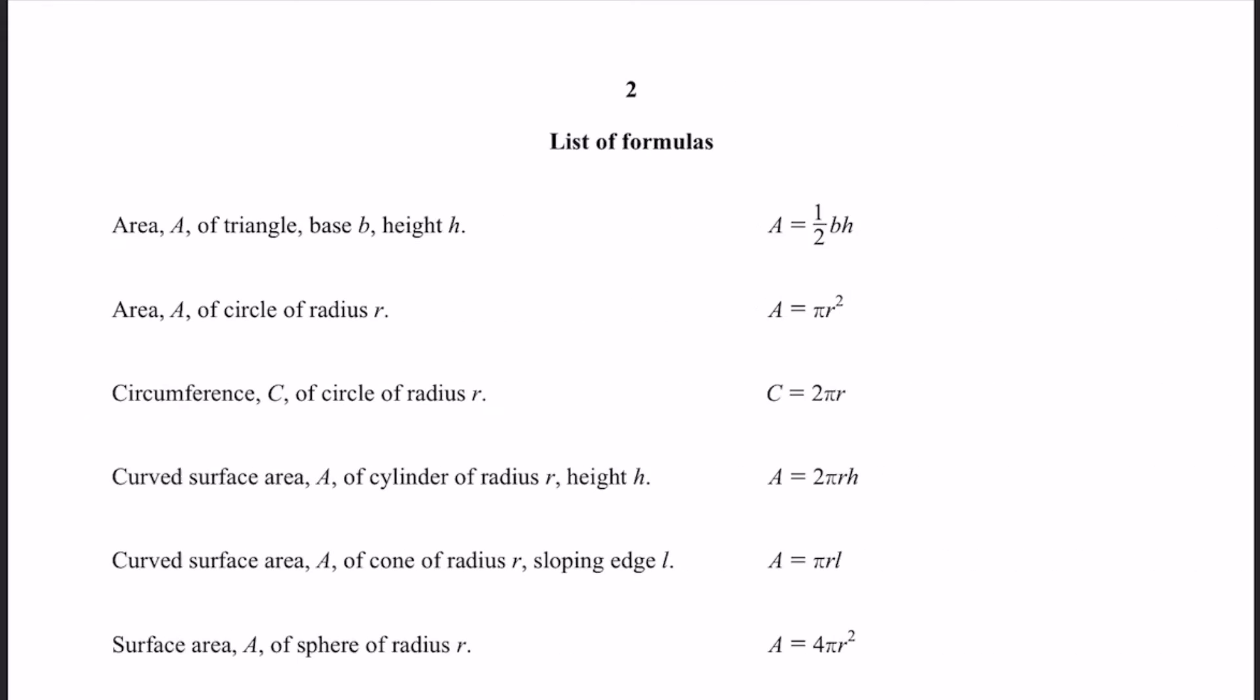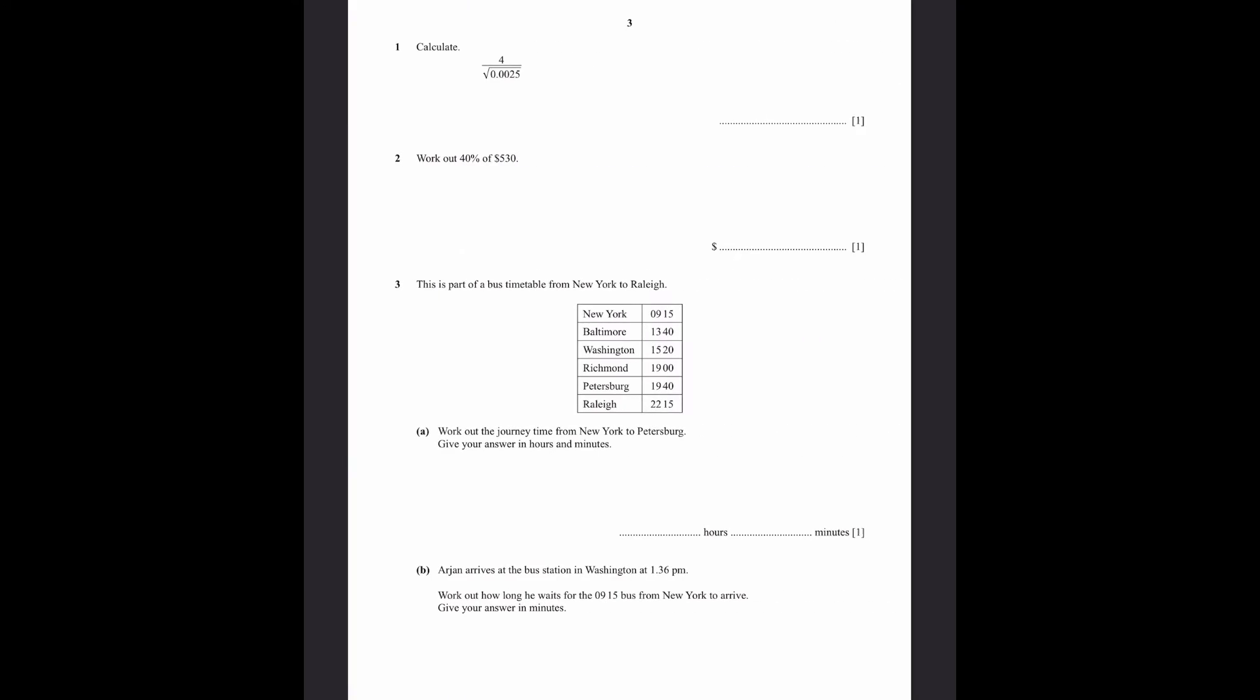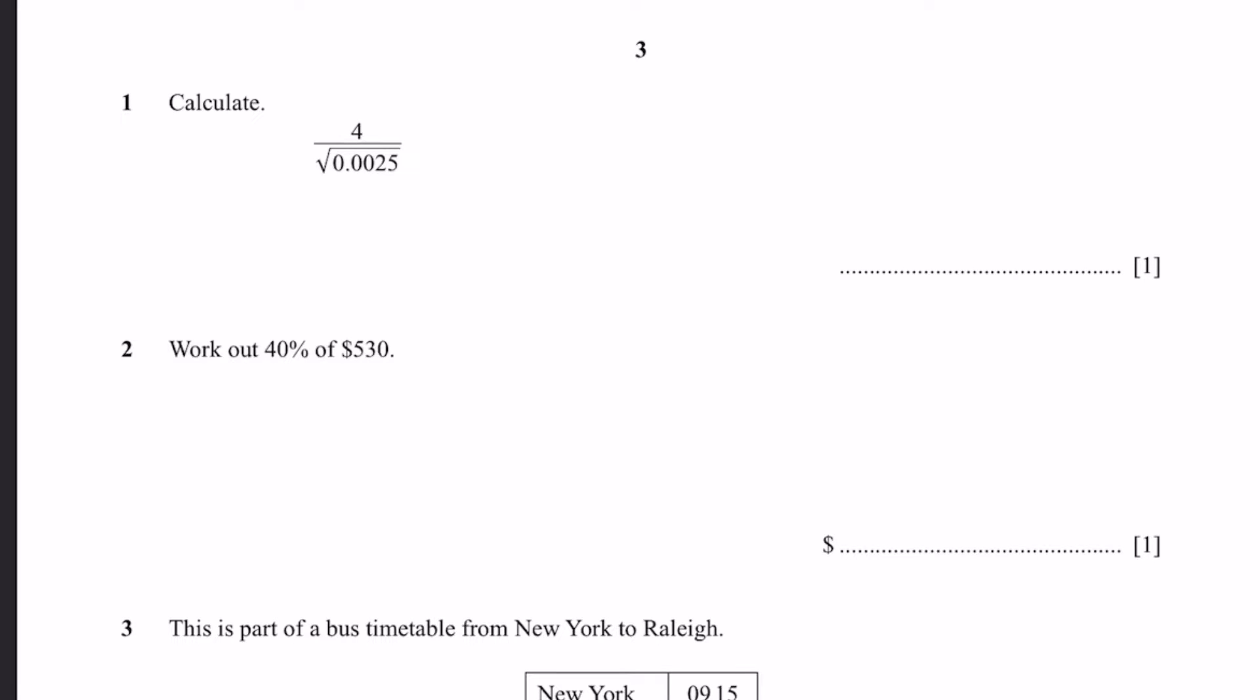Before I go to the questions, I will show you this list of formulas which is given at the front page of every O-Level exam. These formulas are always given. Let's start. Question 1: Calculate 4 divided by the square root of 0.0025. That'll simply be equal to 4 divided by 0.05, which equals 80.